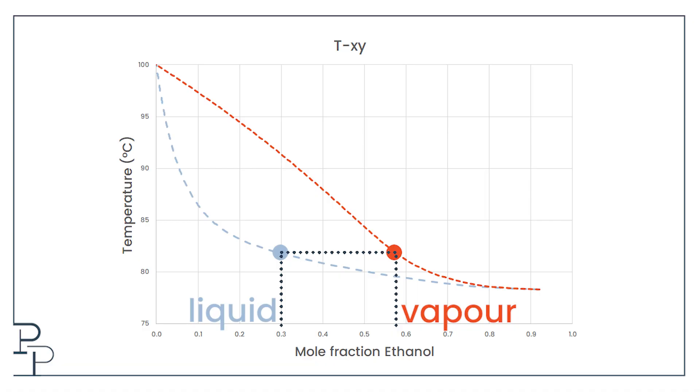So we have a relationship between ethanol in liquid and vapor phases. Now what we need is a mass balance. We need our second tool, the Rayleigh equation.